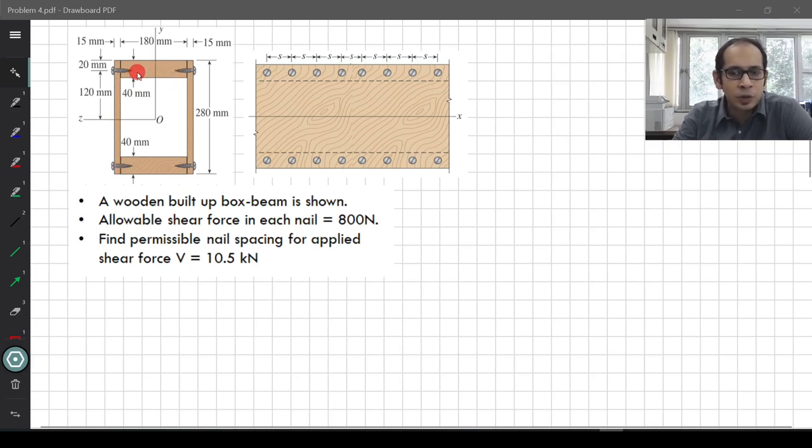You have two different boards. You have this board over here, this board over here and two vertical boards and all of them are fastened with these fasteners which are the nails over here. You are given the allowable shear force in each nail. In each nail can take up to 800 N, not more than that, beyond that the nails will fail.